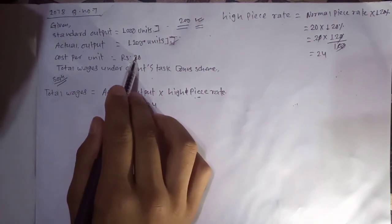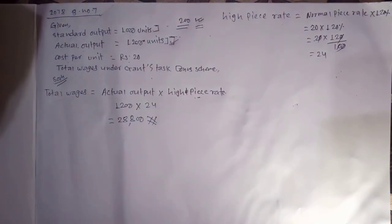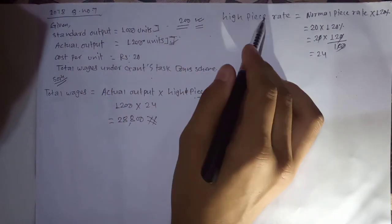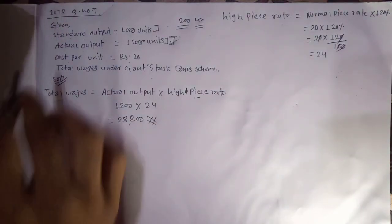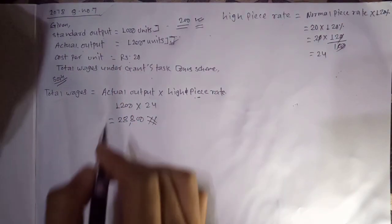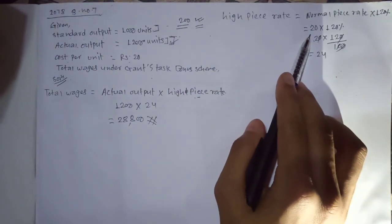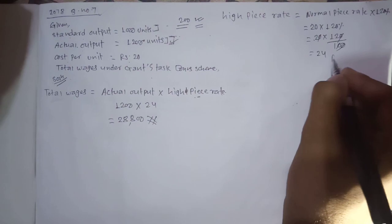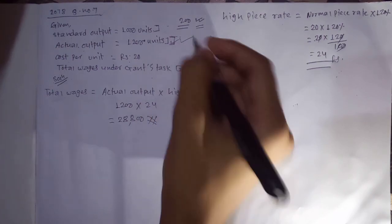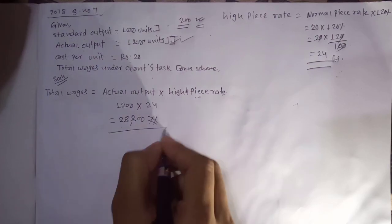We have 20% into 20 upon 100. We saw a minimum discount on the cost per unit. We have 1000 units, 20% of the cost per unit. Actual output is 1200 units, the IPs rate is 24, and 12 into 24 is 28,000 RSI. This is a short question.